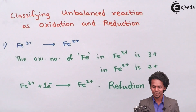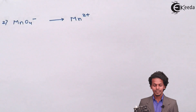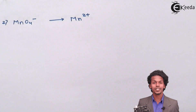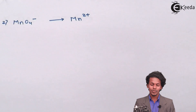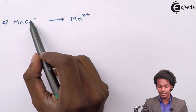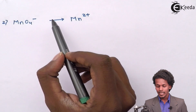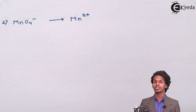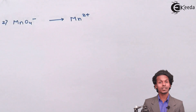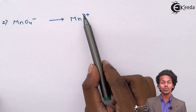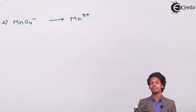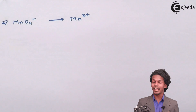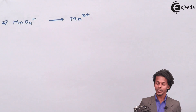Let us look at the next example. This equation is basically unbalanced, and we have to determine whether it is an oxidation or reduction reaction. We can see that manganese in MnO₄⁻ is being converted into Mn²⁺. We cannot directly predict whether it is oxidation or reduction; we first need to determine the oxidation number of Mn in MnO₄⁻, since in addition to manganese, oxygen is also present.